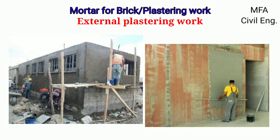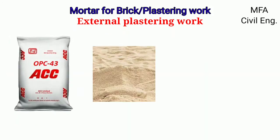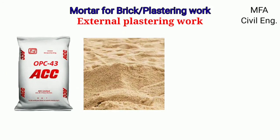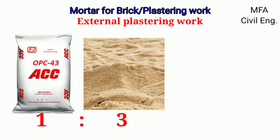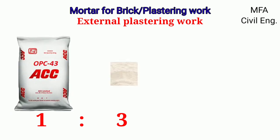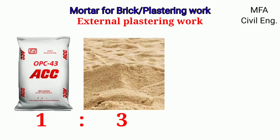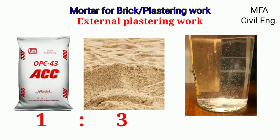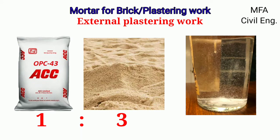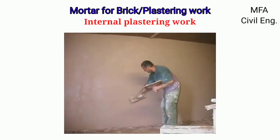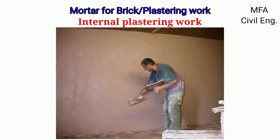For external plastering of a wall and plastering of RCC work, the proportion of cement to sand should be 1:3 in the mortar, that is one part of cement and three parts of sand. The proportion of water in the mortar varies from 0.44 to 0.5 times the weight of the cement.